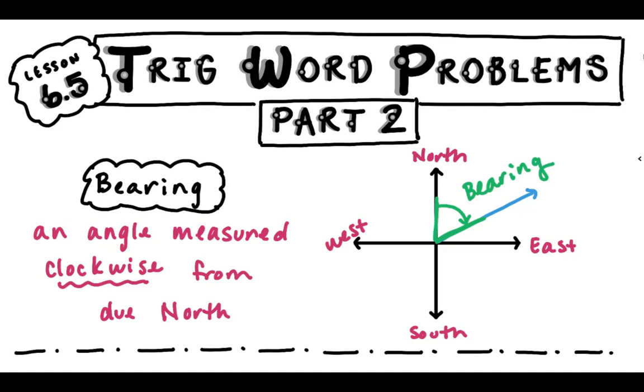So that green angle is going to be your bearing. That's all you need to know about bearings. So in this video we'll do one example, and then I've got two more examples in the second video.